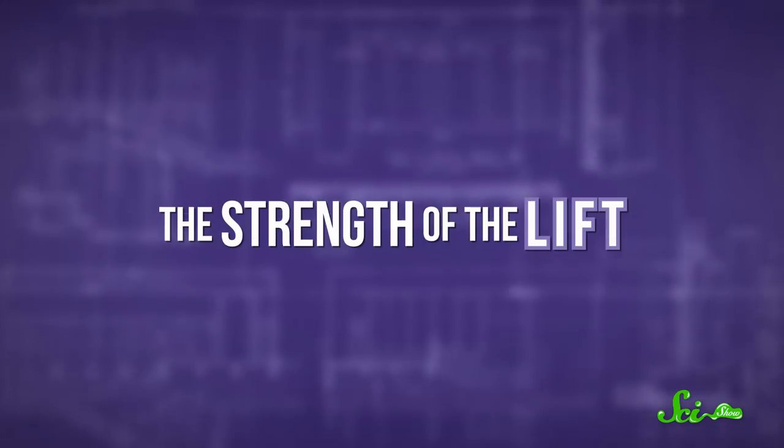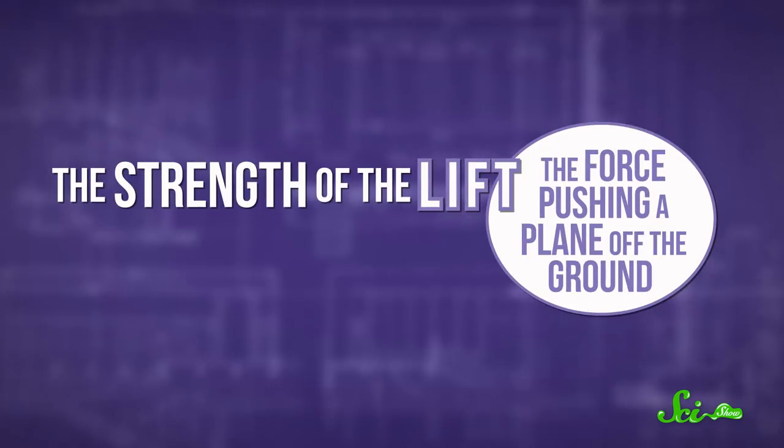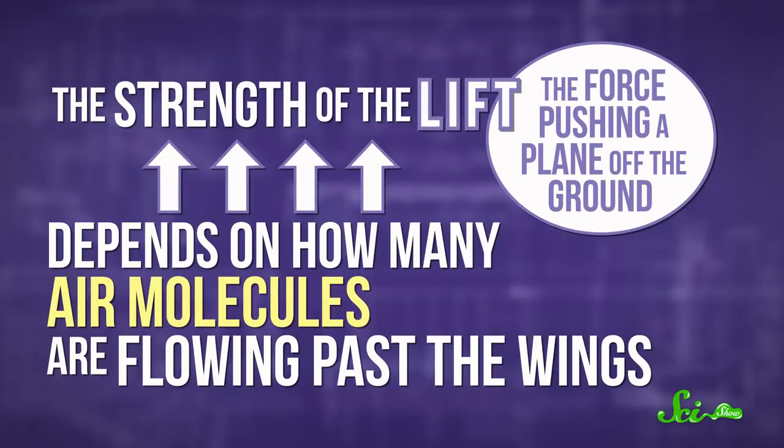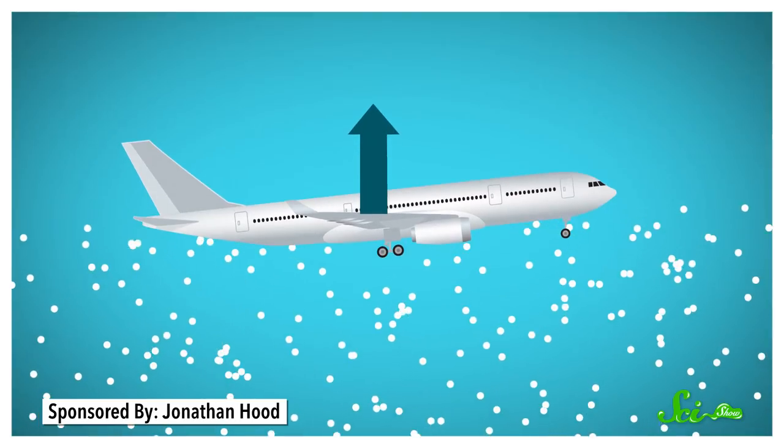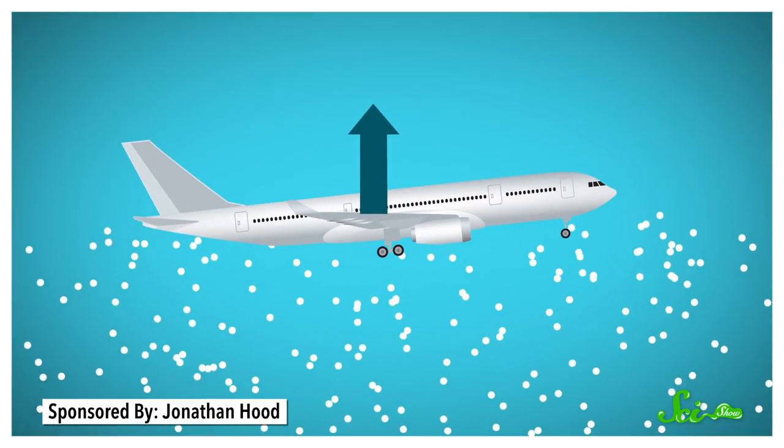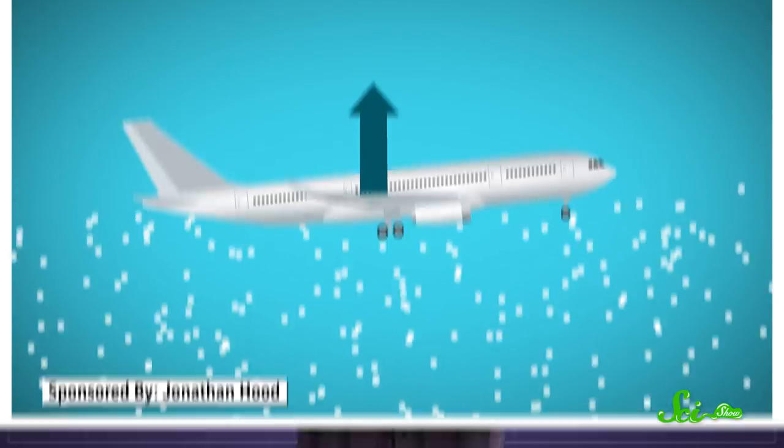The strength of the lift, the force pushing a plane off the ground, depends on how many air molecules are flowing past the wings. The more molecules there are, the more of a push the plane gets. So planes have big, tilted wings to hit lots of molecules, and they speed down the runway to ram through as many as possible.